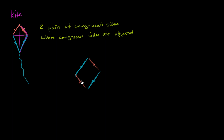Each side in the congruent pair is opposite to the other. So here, once again, we get a quadrilateral — we still get four sides. A kite is a quadrilateral, and this is a quadrilateral, but this isn't a kite. This right over here is a parallelogram, and we've seen that multiple times before.